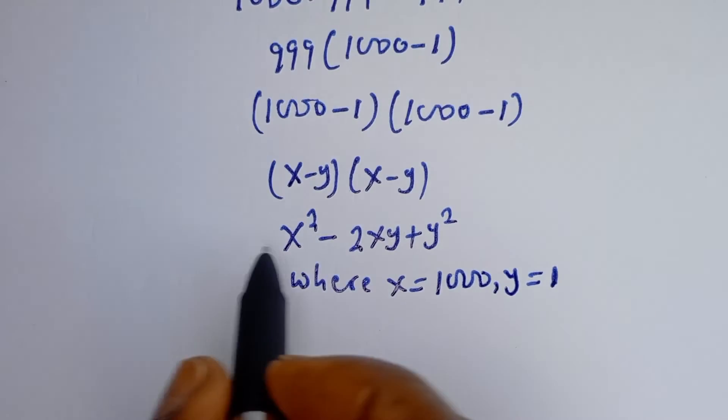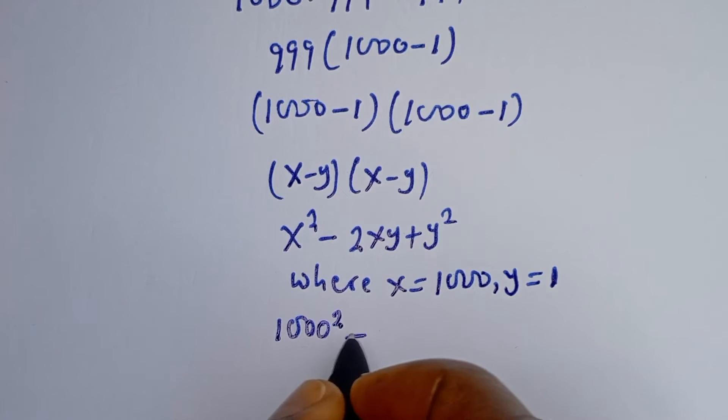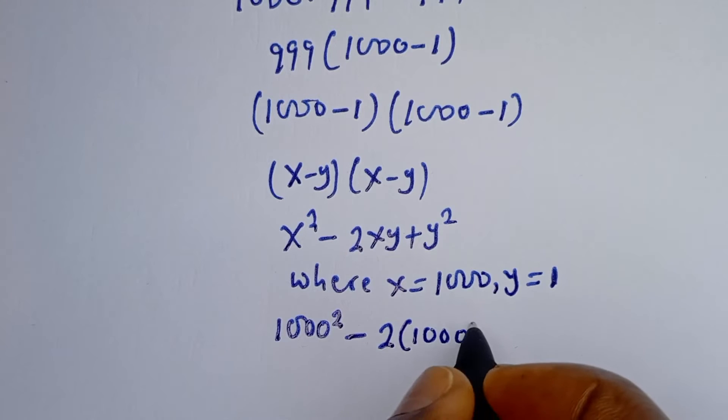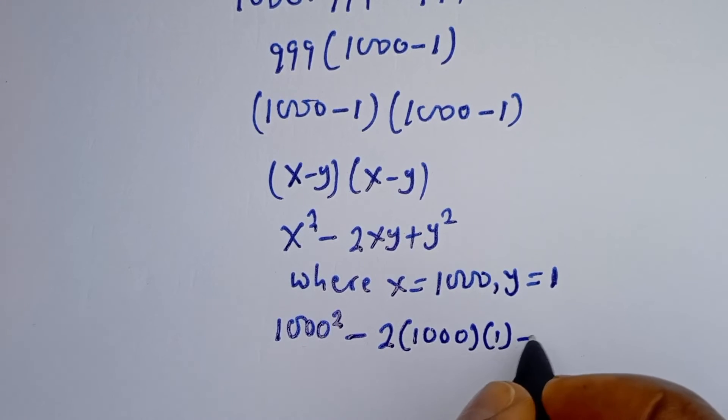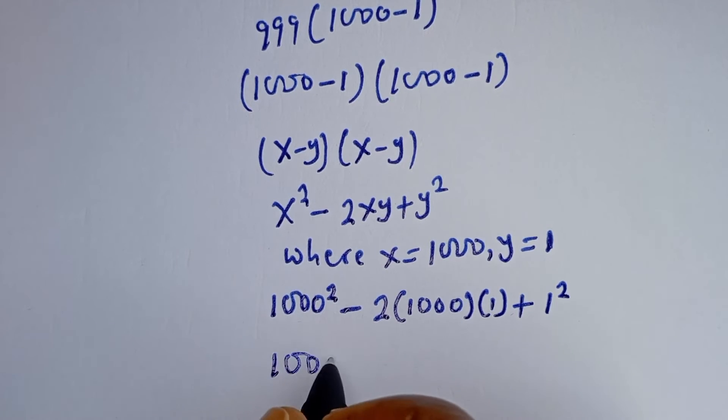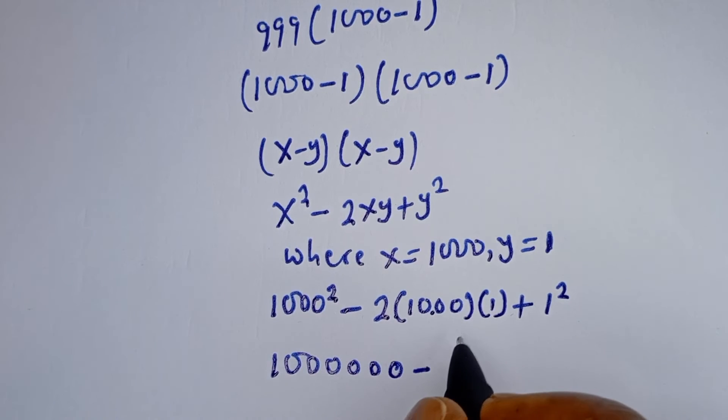Then here we have 1000 squared minus 2 times 1000 times 1 plus 1 squared. 1000 squared is 1000000, minus 1000 times 1.